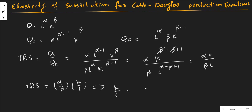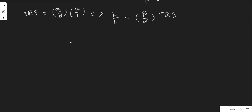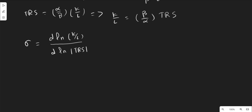So the technical rate of substitution equals (α/β) · (K/L). If we solve for K/L, this implies K/L = (β/α) · MRTS. Now, as we know from the previous video, the elasticity of substitution can be written as: elasticity of substitution = d(log(K/L)) / d(log|MRTS|). Let's call this equation A.